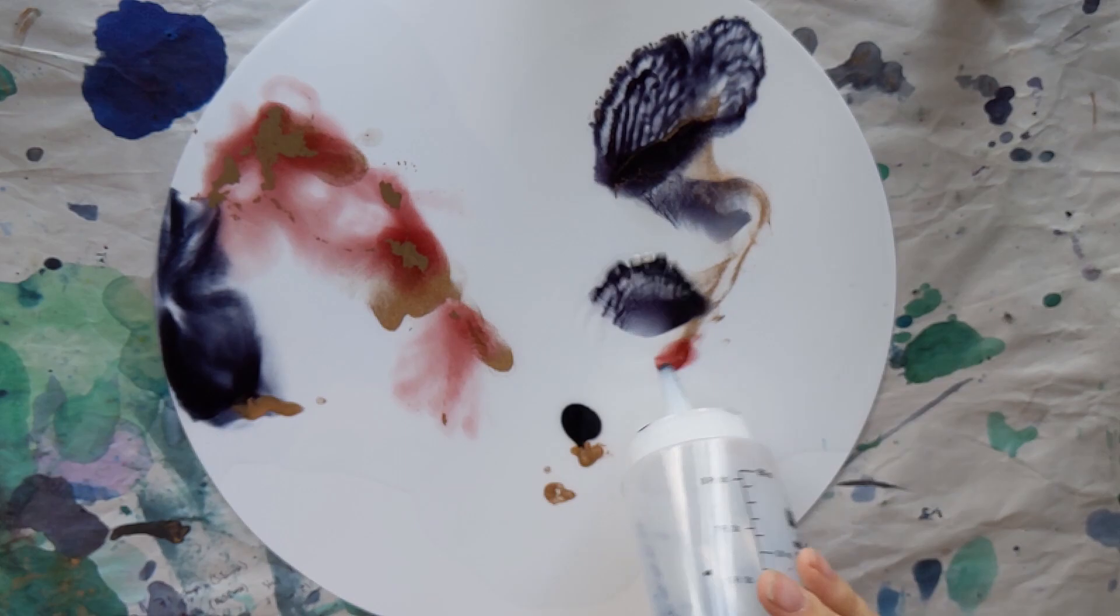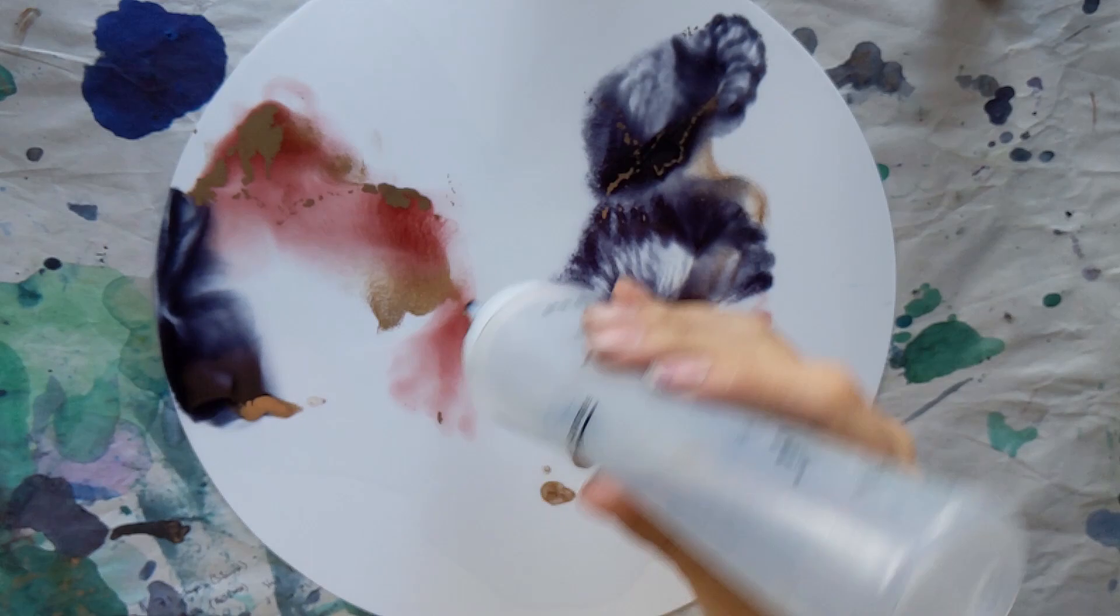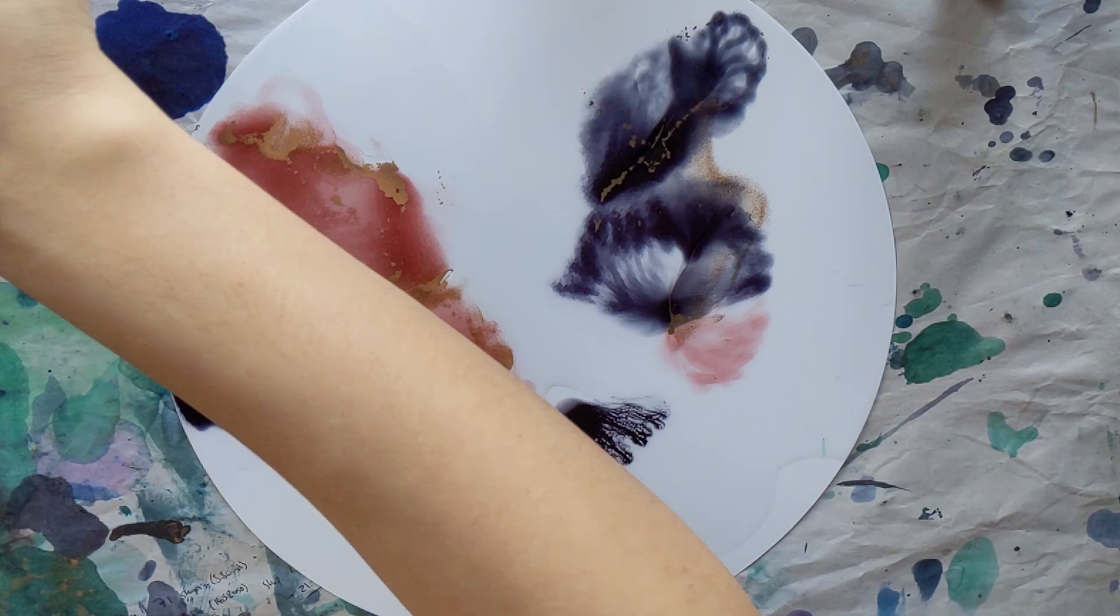Then use your ink blower to start pushing the inks around the page. This helps them to start blending without drying it right away. The hairdryer can sometimes start drying the inks too quickly so they don't have time to move as much as you want them to.